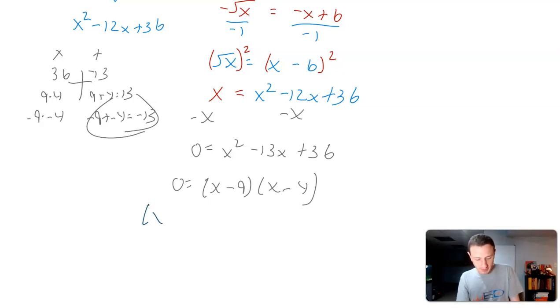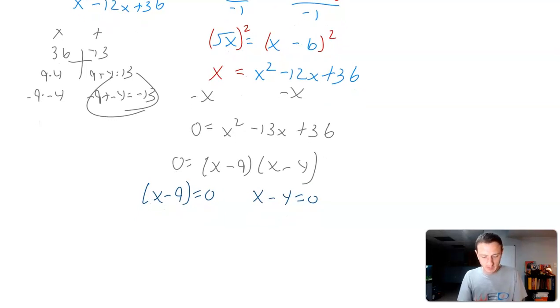I set both of these factors equal to 0. So x minus 9 equals 0 and x minus 4 equals 0. I'm going to add 9 over, so x equals positive 9. I'm going to add 4 over, x equals positive 4.